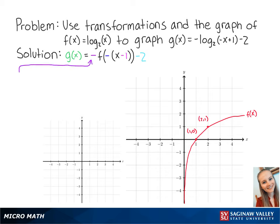The negative function means that we reflect the graph over the x-axis. So our new points are at 2, negative 1 and 1, 0 remains the same. Connecting these points, we get the graph of negative f of x.